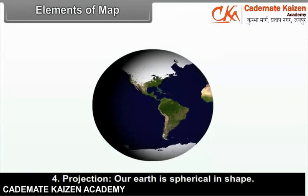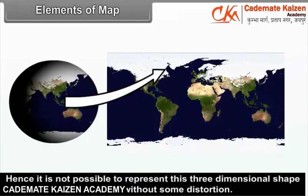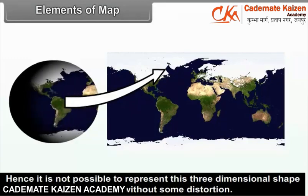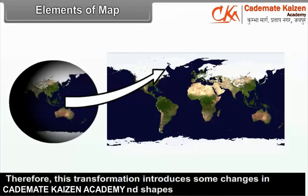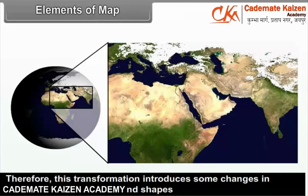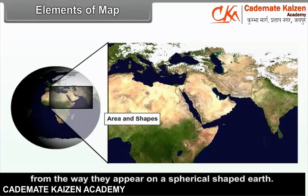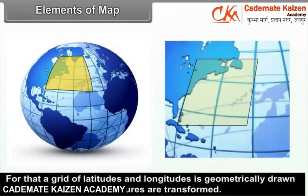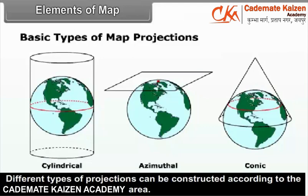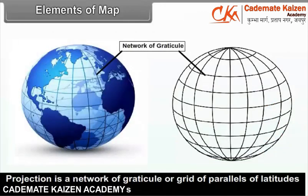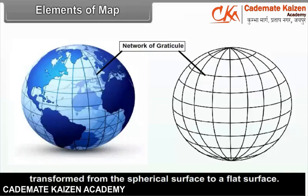Projection: Our earth is spherical in shape. Hence, it is not possible to represent this three-dimensional shape on two-dimensional maps without some distortion. This transformation introduces some changes in directions, distance, area, and shapes from the way they appear on a spherical earth. A grid of latitudes and longitudes is geometrically drawn as a base on which land features are transformed. Different types of projections can be constructed according to the requirements of a map and area. Projection is a network of graticule or grid of parallels of latitude and meridians of longitudes transformed from the spherical surface to a flat surface.